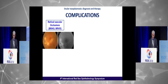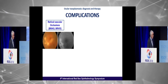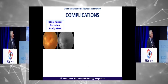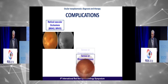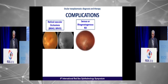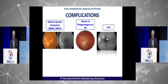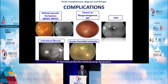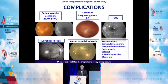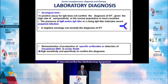Complications of ocular Toxoplasmosis may include retinal vascular occlusion — mainly branch retinal artery occlusion — serous or rhegmatogenous retinal detachment, CNV as a late complication, subretinal fibrosis, acute choroidal ischemia, and many other complications involving the macula.